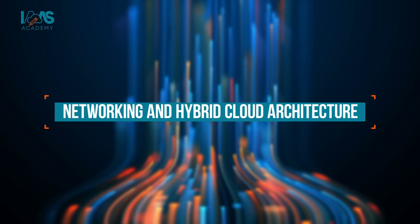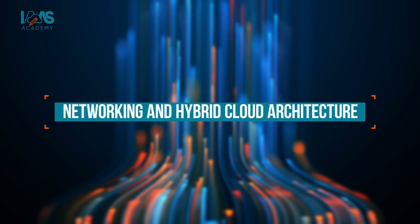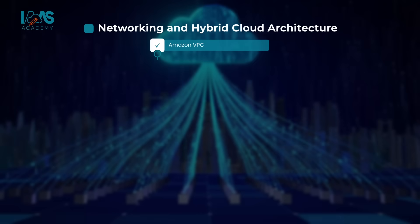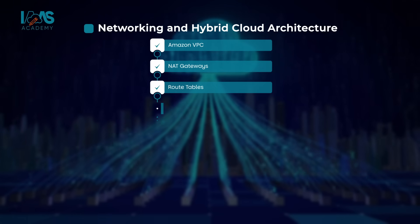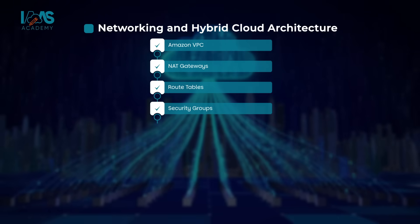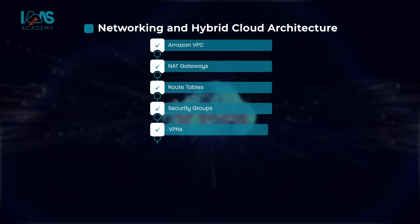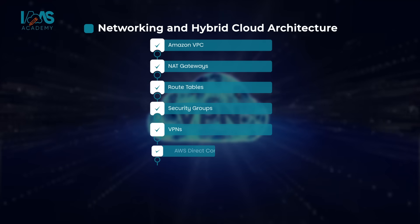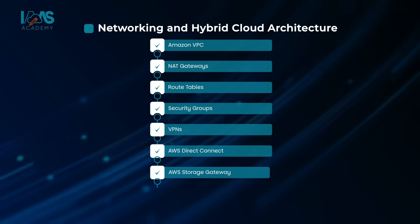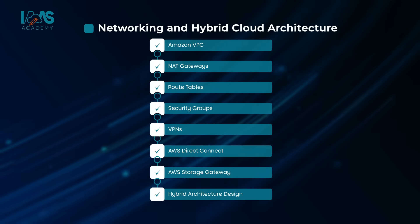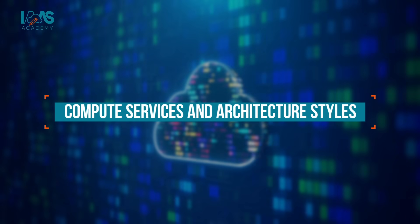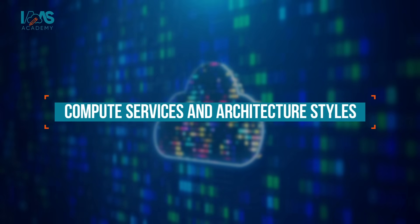We'll take a look at networking and hybrid cloud architecture. You'll master VPCs, NAT gateways, route tables, security groups, and how to connect on-premise environments using VPNs, Direct Connect, and the Storage Gateway for seamless hybrid architectures. We'll then move on to compute services and architectural styles.